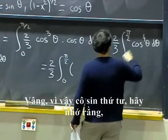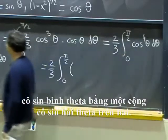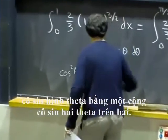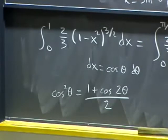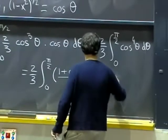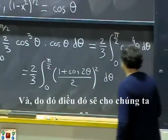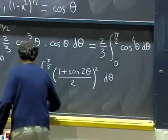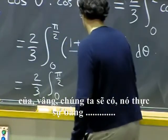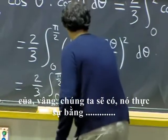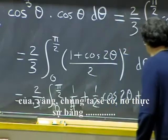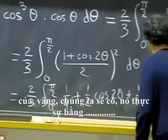OK, so cosine to the fourth, cosine squared theta is one plus cosine two theta over two. And we want the square of that. And so that will give us, well, we'll have, it's actually one-quarter plus one-half cosine two theta plus one-quarter cosine squared two theta d theta.